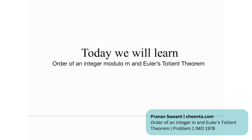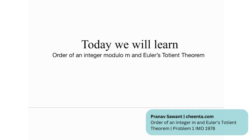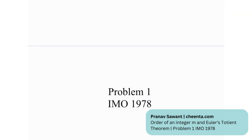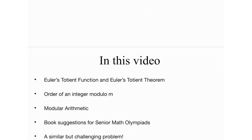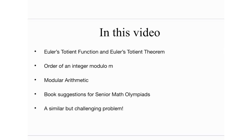Without wasting any time, let's just get right into it. This is problem number one from the IMO in 1978. In this video, we're going to learn what the Euler–Totient function is and what the Euler–Totient theorem is — both the function and the theorem. We're also going to learn about the order of an integer modulo m, calculate certain mod m, play around with modular arithmetic, and at the end, tackle a similar but challenging problem.